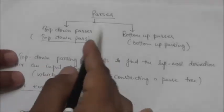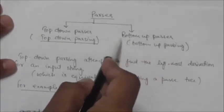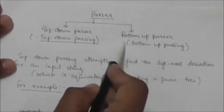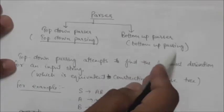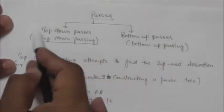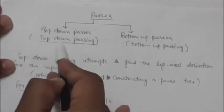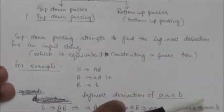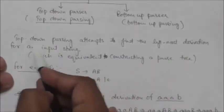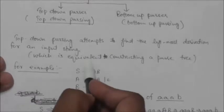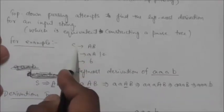Parsers are of two types: top-down parser and bottom-up parser. Bottom-up parser performs bottom-up parsing, which we will study later. In this tutorial we will study only about top-down parser. Top-down parsers do top-down parsing, which attempts to find the leftmost derivation for an input string, which is equivalent to constructing a parse tree.